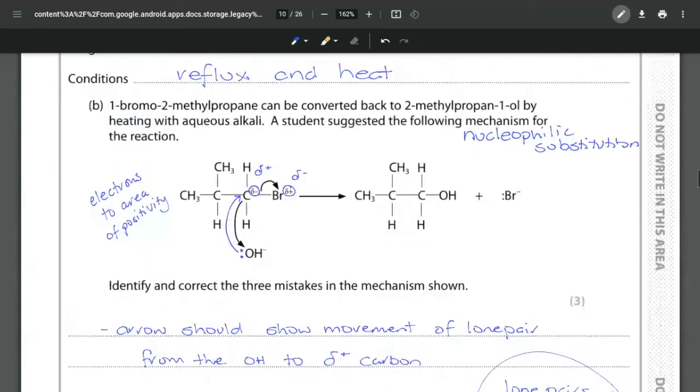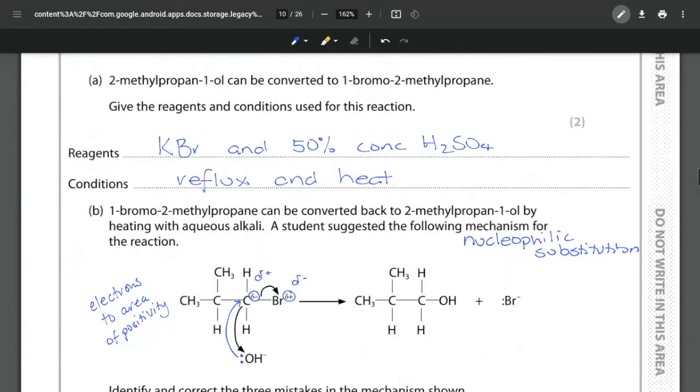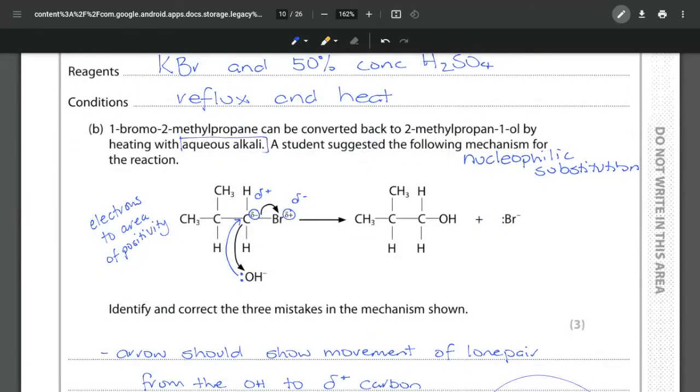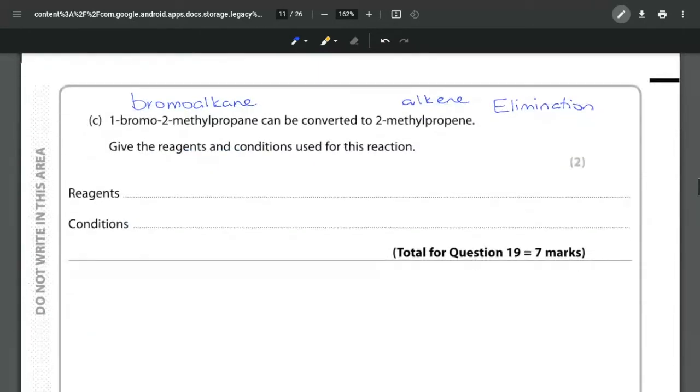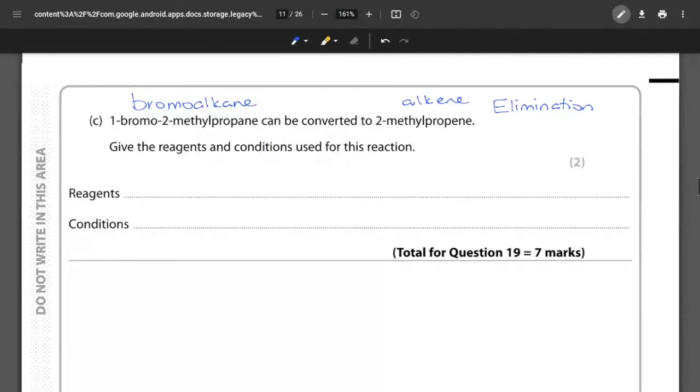If we just go back up here you can see that we specified that this required aqueous alkali. If the alkali is in aqueous conditions we get the nucleophilic substitution. If we use the alkali under non-aqueous conditions we can get this elimination. Our reagent is going to be potassium hydroxide and the most important thing for the conditions is it is in ethanolic conditions. We dissolve the KOH in ethanol instead of water, and this also requires reflux with a little bit of heat.